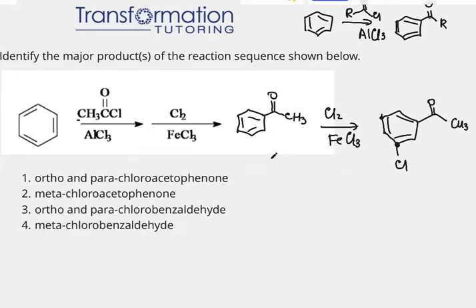The last thing you have to do is figure out what is the name of our product. Some of the choices say ortho and para—that's not true, we decided that this one was meta. Then what is this called? This C double bond O, it's between two carbons and it's a ketone. If you have C double bond O between two carbons, that's a ketone. If you have C double bond O next to hydrogen and a carbon, that's an aldehyde. In our case it's between two carbons, so it's certainly a ketone, therefore it cannot be benzaldehyde because that's an aldehyde. The correct answer should be meta-chloroacetophenone.